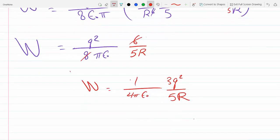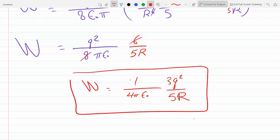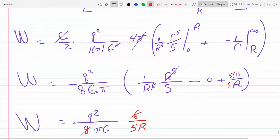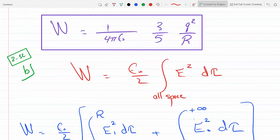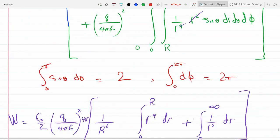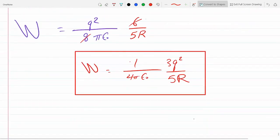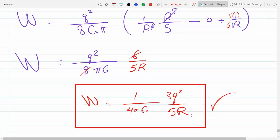If our work is consistent, it should be the same answer we obtained above. Let's box it and take a look. Indeed it's the same! So using the integral of the electric field squared over all space, we are also able to find the energy using a different method.